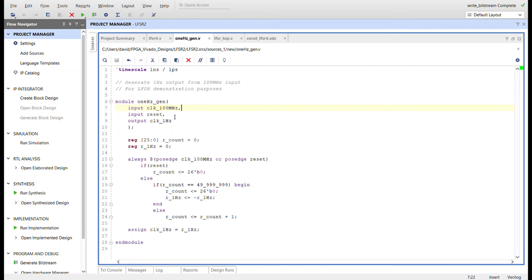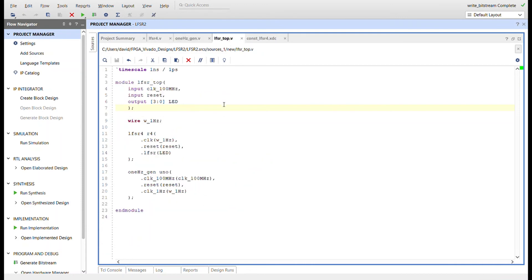Here's the top module. Got the clock, the reset, using four LEDs so we can see the register of the LFSR. And just tying the 1 Hertz generator to the LFSR using a wire for the 1 Hertz. That will come out of here and feed into here, and the LEDs will come out.